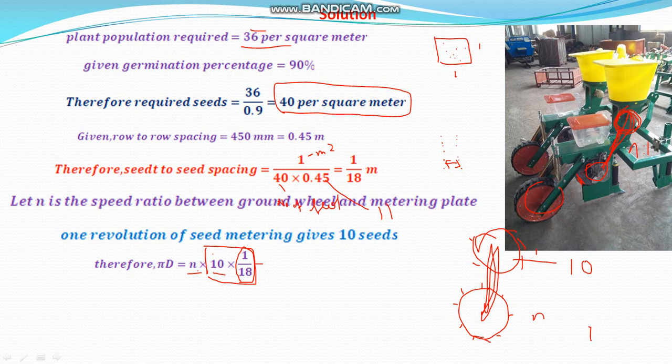If the ground wheel rotates once, the metering plate will rotate n times. So n:1 is the speed ratio. Pi times d is the circumference — if the ground wheel rotates once, it travels pi×d (the peripheral length). So pi×d is equal to n into 10 seeds, and those n×10 seeds will cover that length. Therefore z should be equal to this length, and we can evaluate and find n.